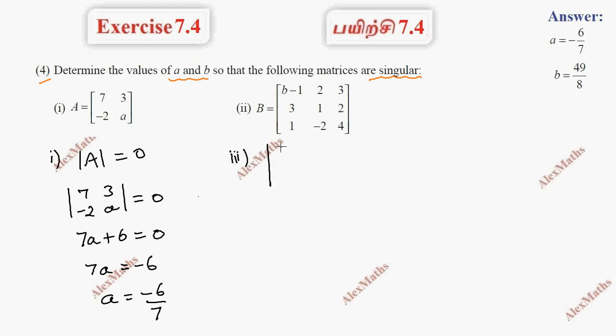The determinant of the matrix: b minus 1, 2, 3 / 3, 1, 2 / 1, minus 2, 4 — this equals 0.